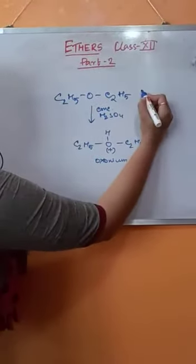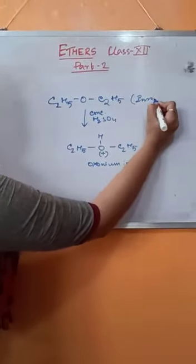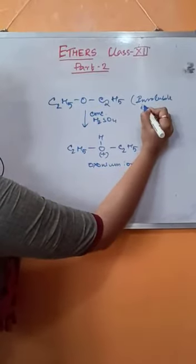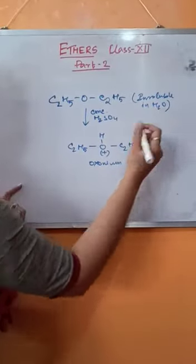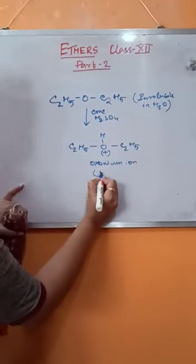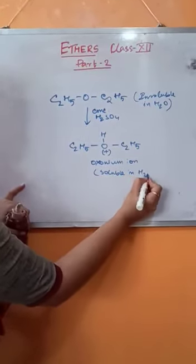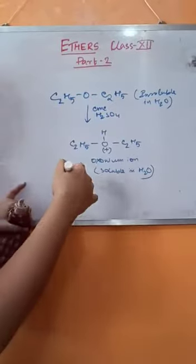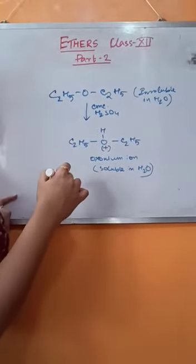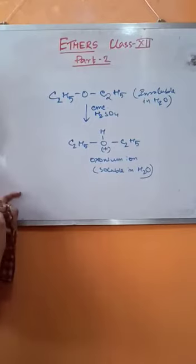Ethers are insoluble in water, whereas the oxonium ions are soluble in water. This technique or this process is useful in removing ether from ethyl bromide.